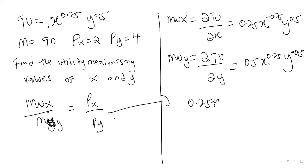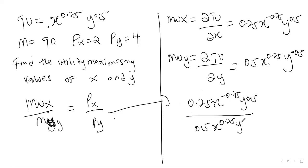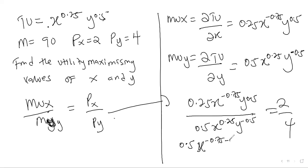So MU of x over MU of y equals 0.25 x raised to the power negative 0.75 y raised to the power 0.5, divided by 0.5 x raised to the power 0.25 y raised to the power negative 0.5, and this equals Px over Py which is 2 over 4. Now we do some indices work — dividing the like terms: 0.25 divided by 0.5, then x raised to the power negative 0.75 minus 0.25, then y raised to the power 0.5 minus minus 0.5, and 2 divided by 4 is 0.5.